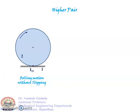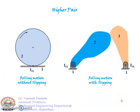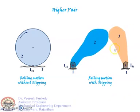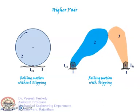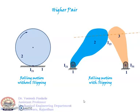For a higher pair having both rolling and slipping, link 2 and link 3 constitute a higher pair with both rolling and slipping relative to each other. In this case, the relative instantaneous center lies somewhere on the common normal at the point of contact. Exactly where on the common normal will be discussed later. With this information plus the application of Kennedy's theorem, we should be able to determine all the relative instantaneous centers of a planar mechanism.